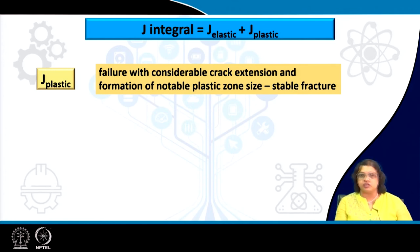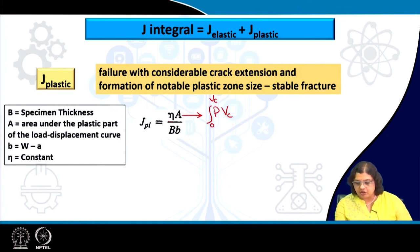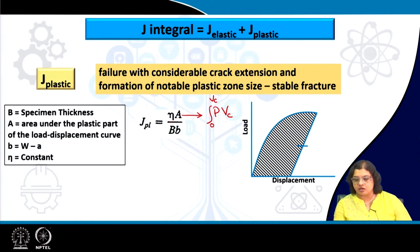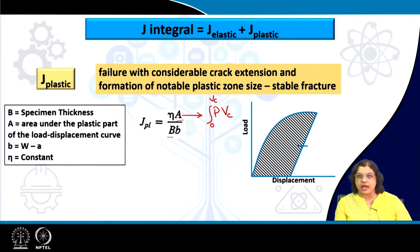J_plastic depends on several factors: eta, which is a constant dependent on the specimen configuration, and A — the area under the load-displacement curve. That area can be obtained by integrating from 0 to V_c (the critical displacement at fracture) to find the hatched plastic area. Capital B is the specimen thickness and small b is the ligament length, dictated by the difference between the specimen width and crack length — the region where plastic deformation particularly occurs.